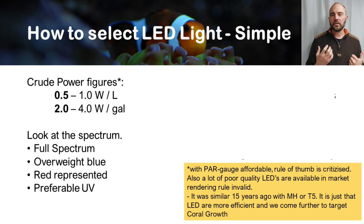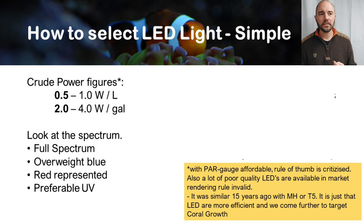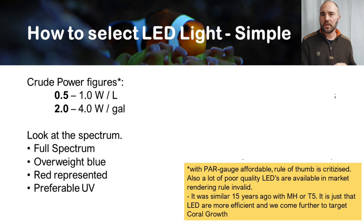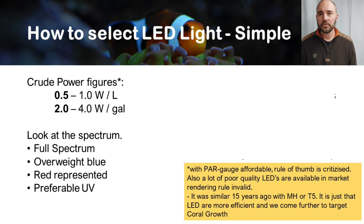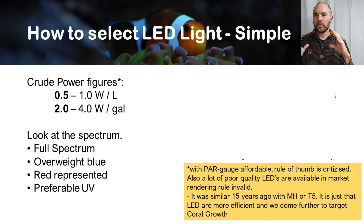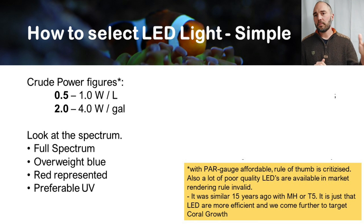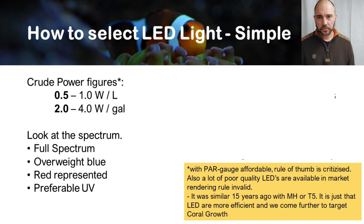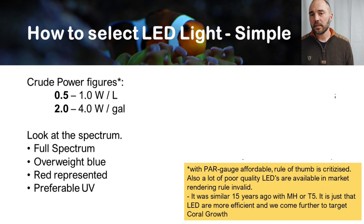From my perspective, 15 years ago we used the same rule of thumb for metal halide or T5 lighting, and the discussion was similar — it was because we had poor quality options in those technologies as well. I still see a gain in using the power figures. Compared to metal halide or T5, LEDs are more efficient and even better at targeting the blue range where we get good photosynthesis, so the power figures have ticked down drastically. For a 100-liter tank, I would recommend starting around a 50-watt LED with good coverage.